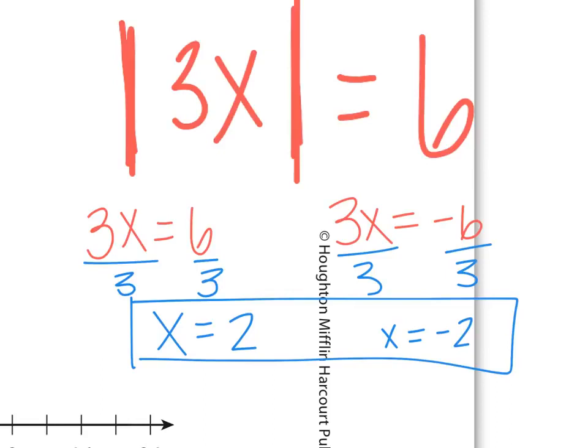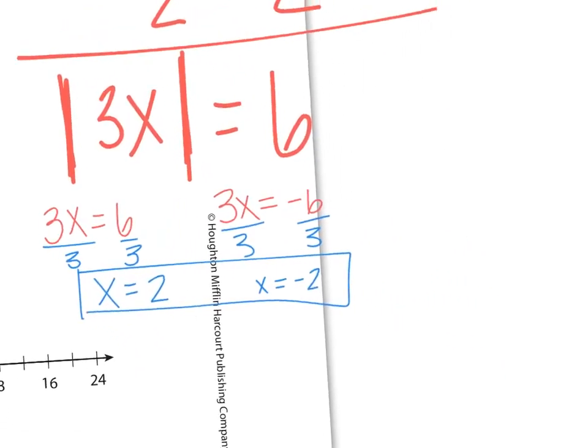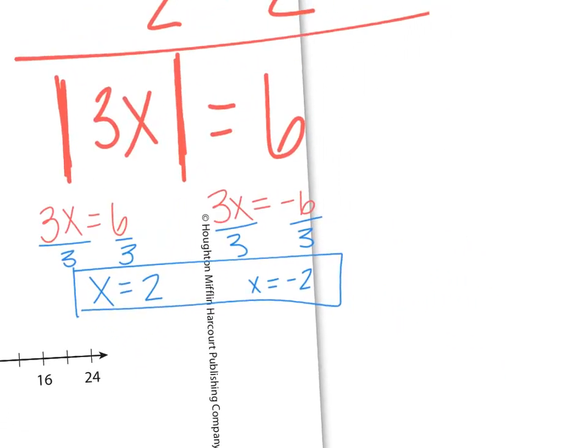Think about why graphically we would have two answers. It's like our two roots essentially, because it's a V shape. I'm looking for essentially where my roots are — it would cross twice because the graph goes back down since it is decreasing on part of it, and then it turns around and is increasing again.